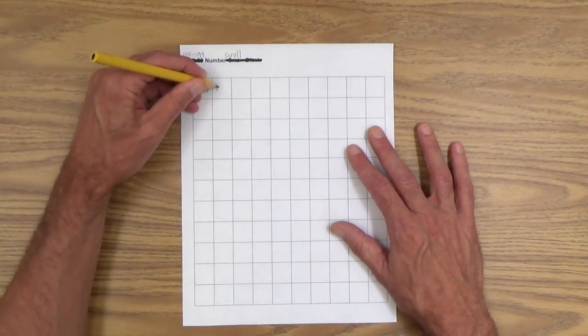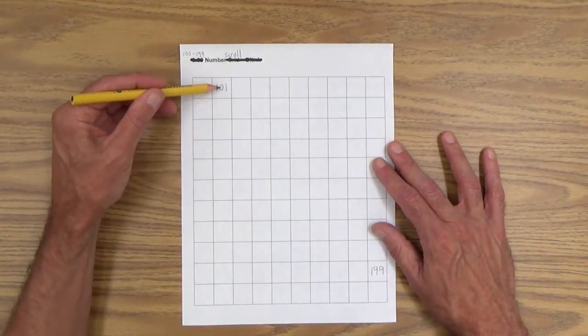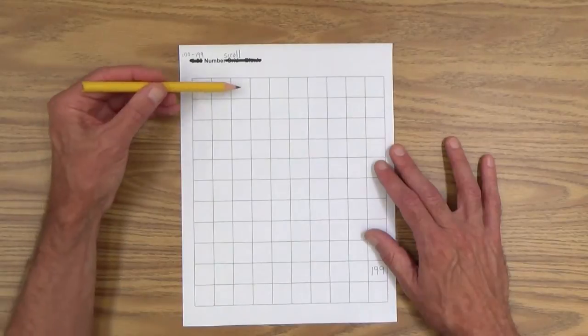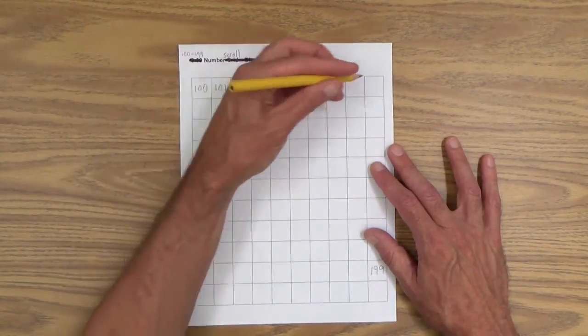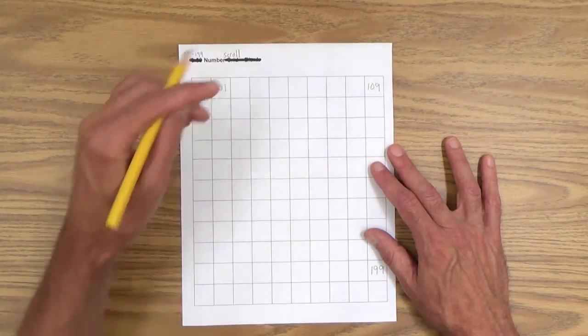And 100, 101. So you need that zero to hold the place. And of course, she can go on all the way to 109.